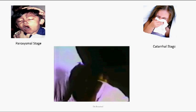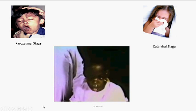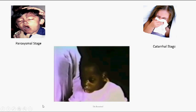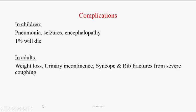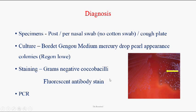At the end of a paroxysmal coughing episode, the child is exhausted and the face is covered with thick mucus. Complications in untreated patients, especially children, include pneumonia by Staphylococcus or Streptococcus pneumoniae, seizures, and encephalopathy. One percent of untreated patients die. In adults, complications include weight loss due to increased IL-1 and tumor necrosis factor, urinary incontinence, syncope, and rib fractures from severe coughing.